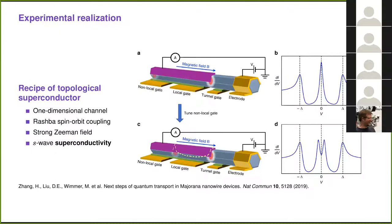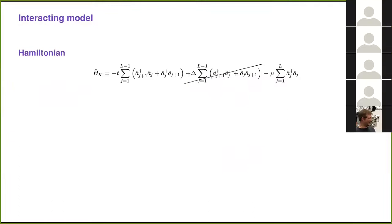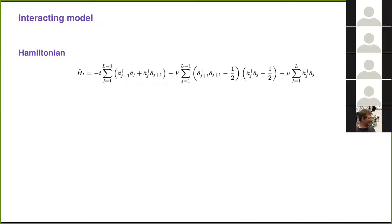Can we have Majoranas in a system which does not have superconductivity? Superconductivity arises as a result of attractive interaction between electrons. So what we can do is get rid of the term describing P-wave superconductivity in the Kitaev chain and replace it with real attractive interaction between fermions on neighboring sites.